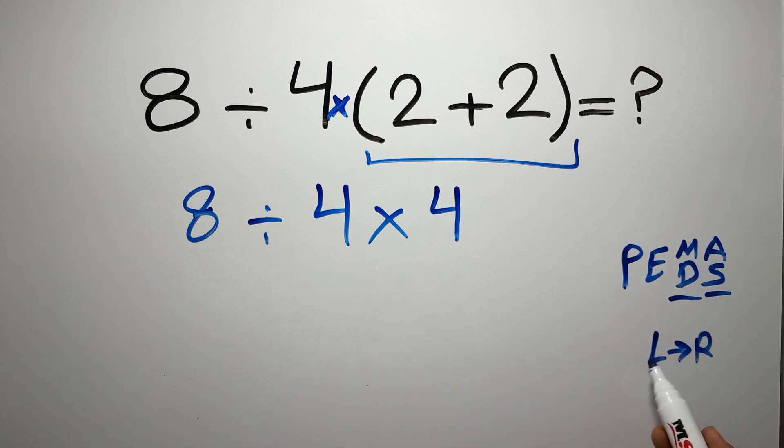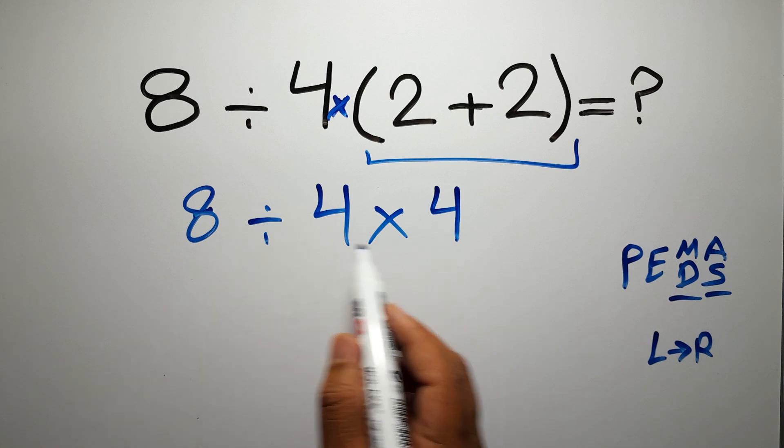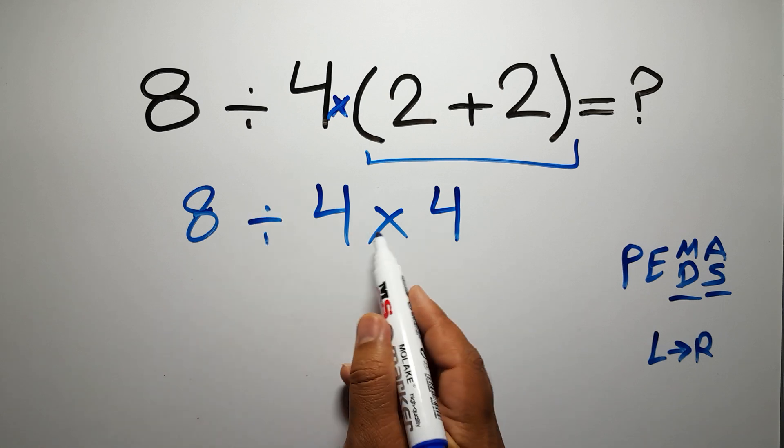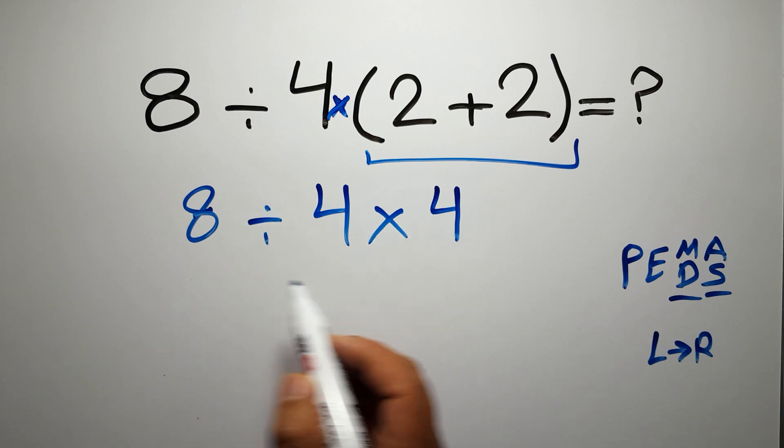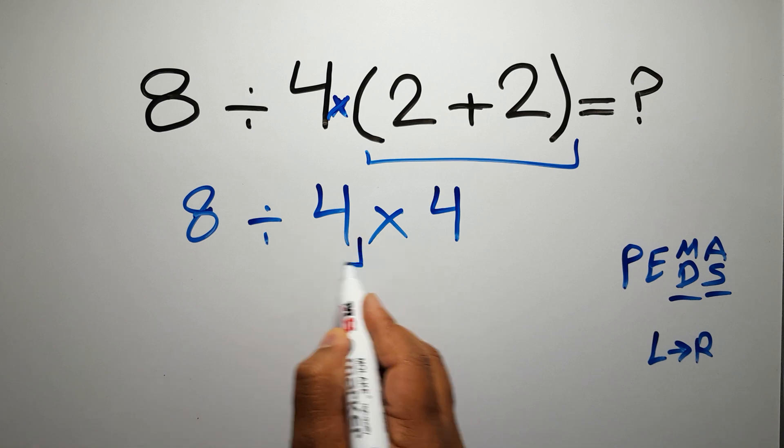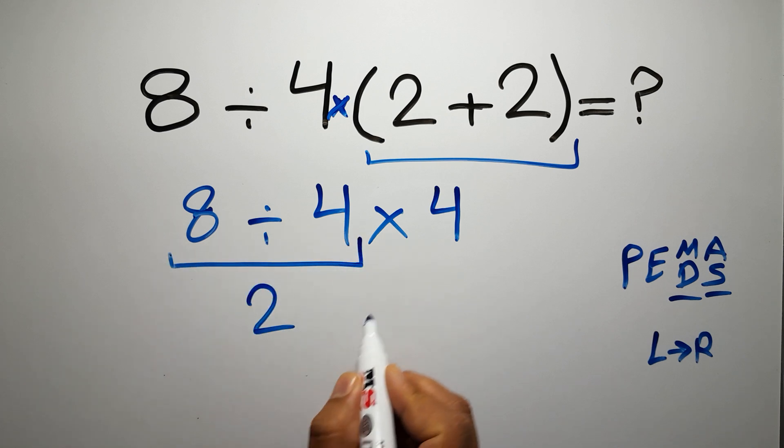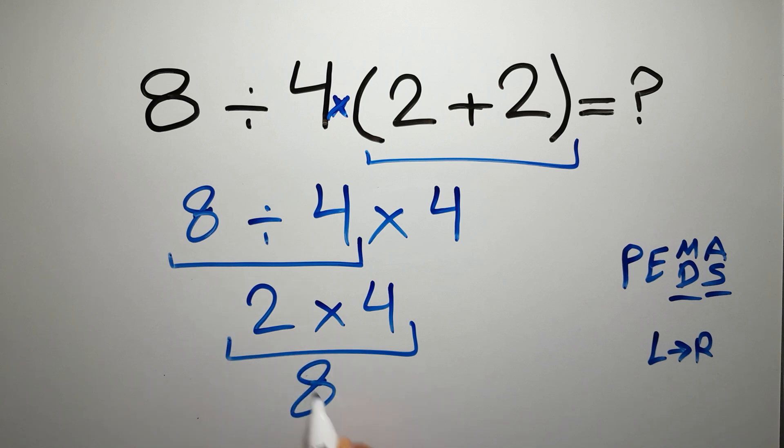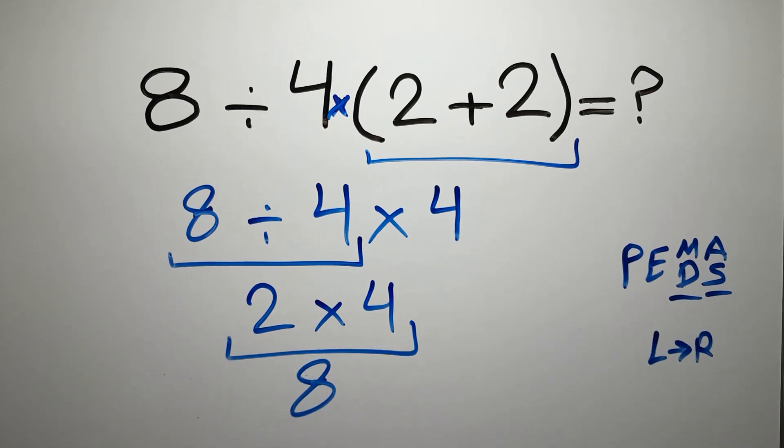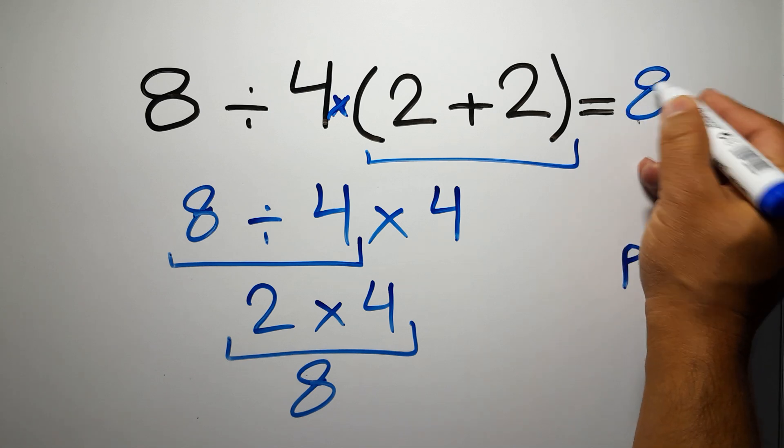So here, first we have to do this division, not this multiplication. 8 divided by 4 gives us 2, and 2 times 4 is just 8. And this is our final answer to this problem. The correct answer is 8.